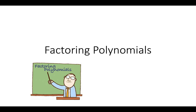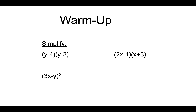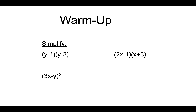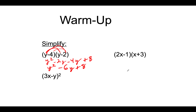We're going to work on factoring polynomials. A couple of review things before we get into what we're really working on today. When we're factoring, we're going to be reversing the distributive property. So if we were going to multiply these together, you would have y squared minus 2y minus 4y plus 8, which ends up as y squared minus 6y plus 8. What we're doing today is given this result, we need to go backwards.